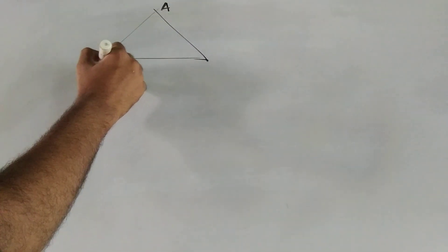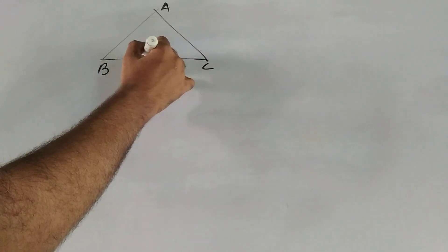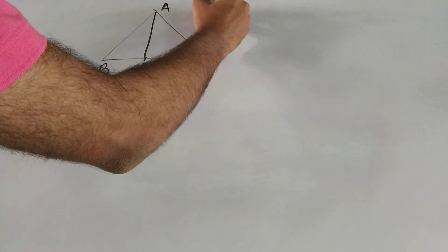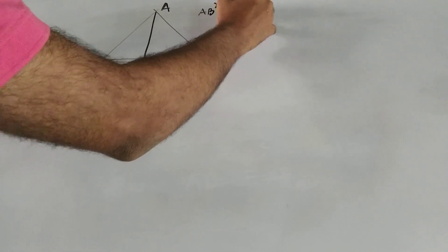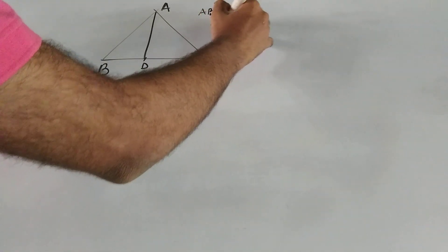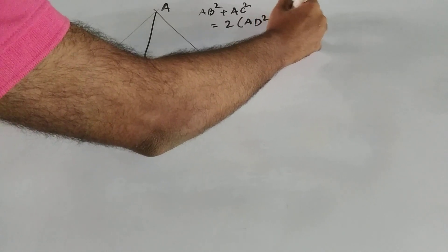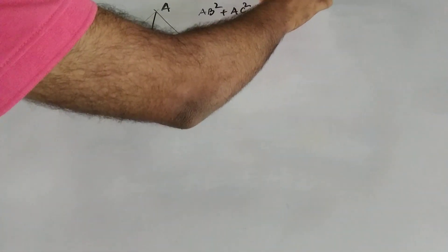Let me just recapitulate that one. Let ABC be a triangle, D is the midpoint of base BC. Let it be any triangle, then Apollonius theorem states that AB square plus AC square equal to 2 into AD square plus BD square from Apollonius theorem.